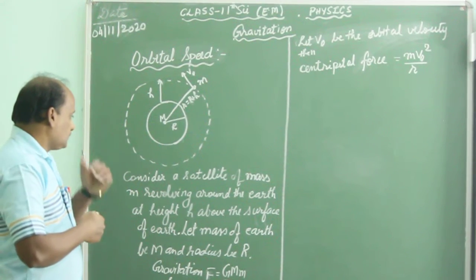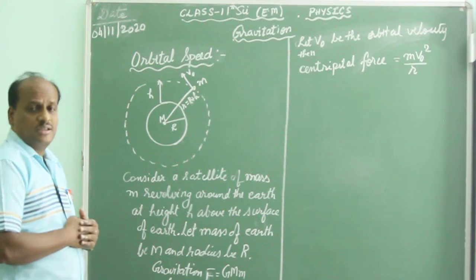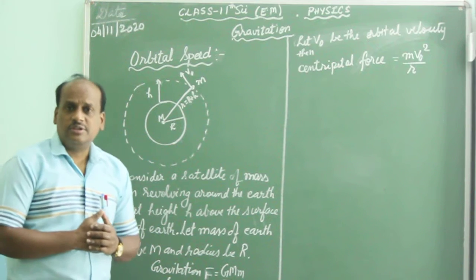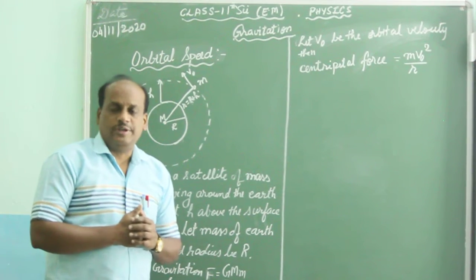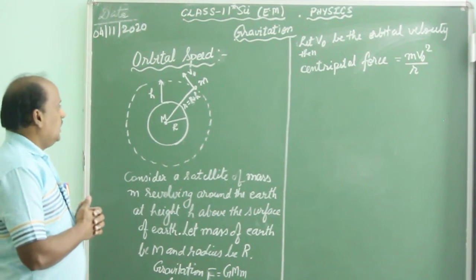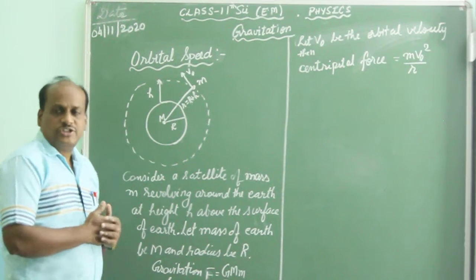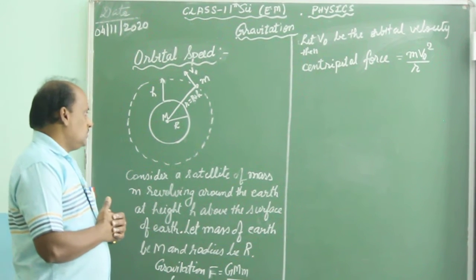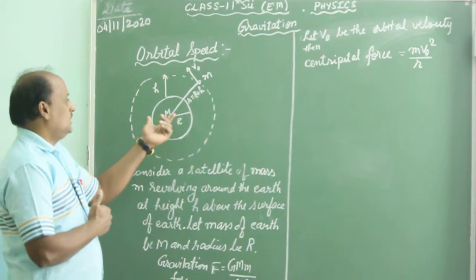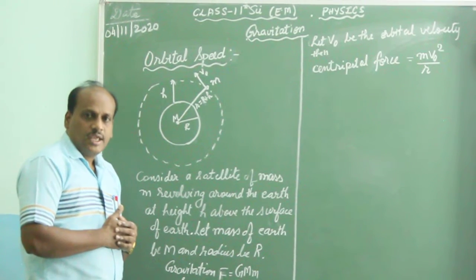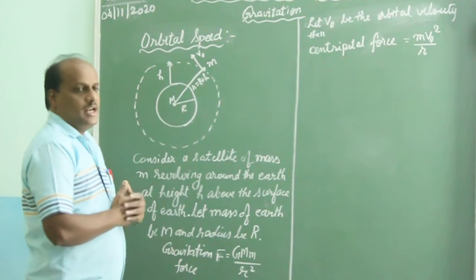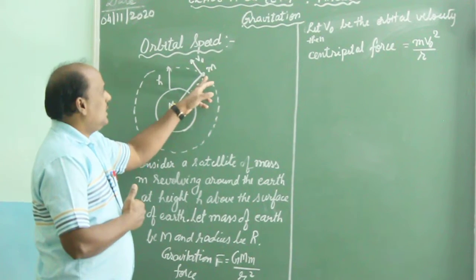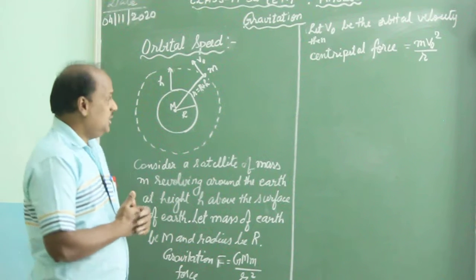Consider a satellite of mass small m which is revolving around the Earth in a circular orbit. It is placed at a height h from the surface of Earth. The radius of Earth is R and the mass of Earth is capital M. Let the orbital speed of this satellite be V0.